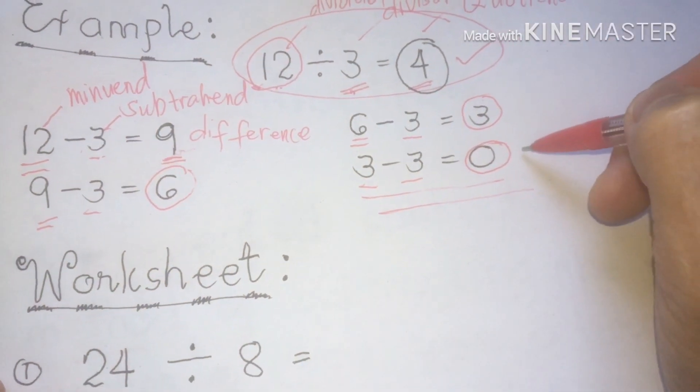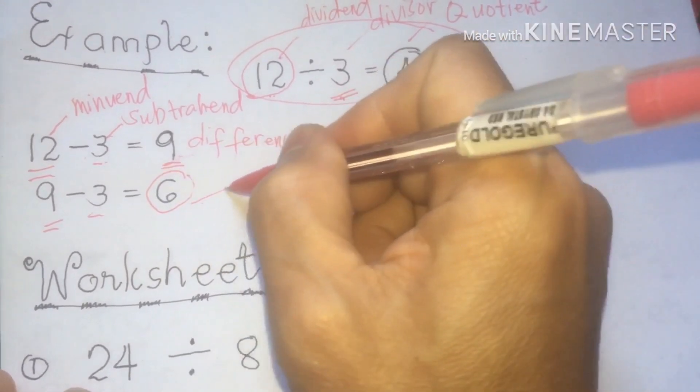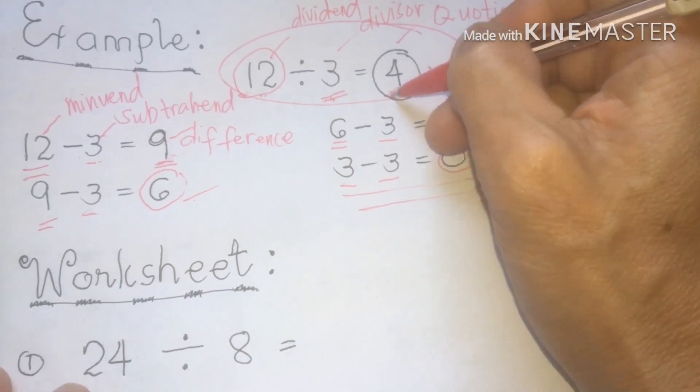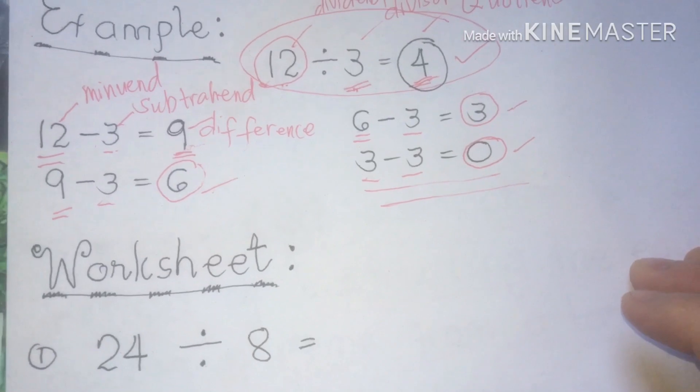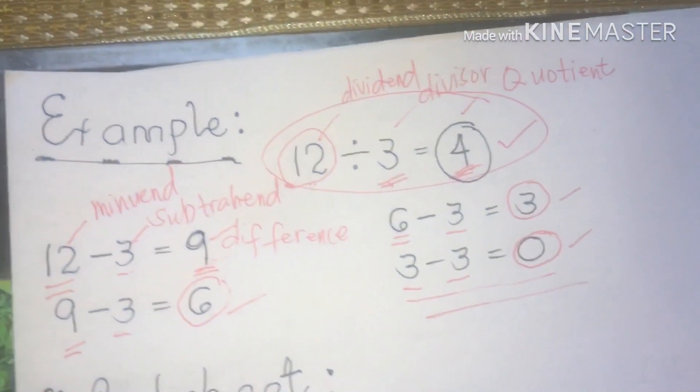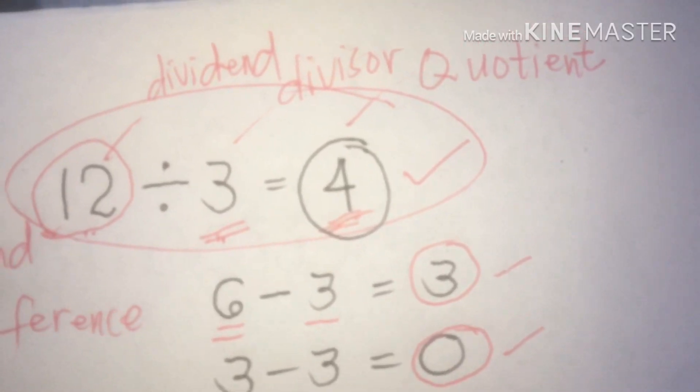We're going to count. 1, 2, 3, 4. So we're going to write our answer is 4. That's it. That is what we call a short and a very good technique in answering the division process using subtraction method.